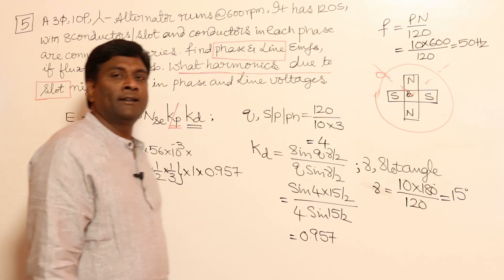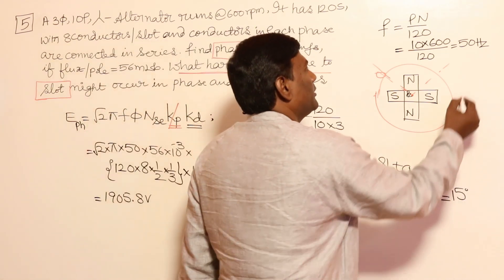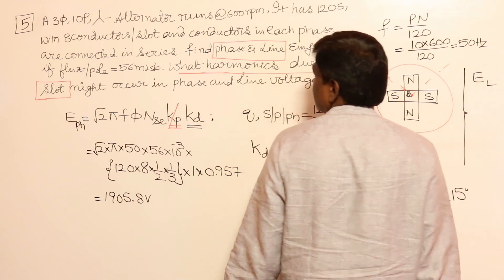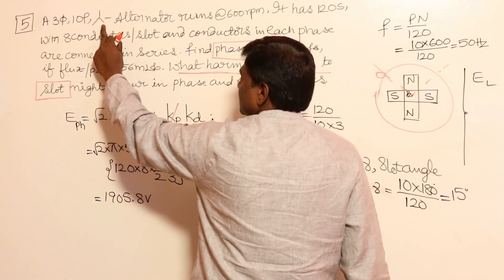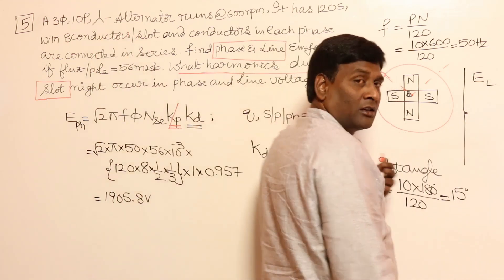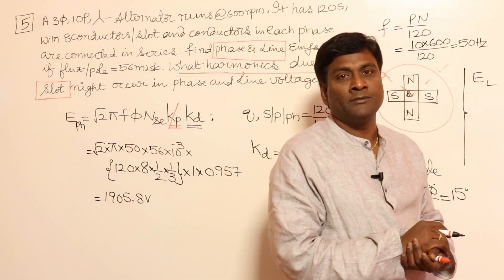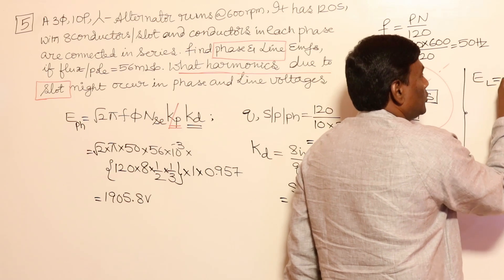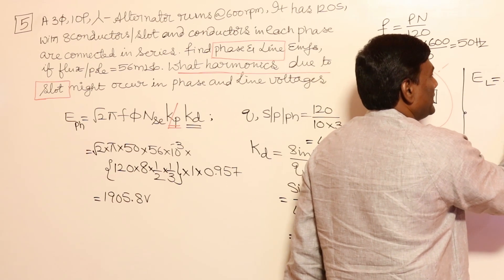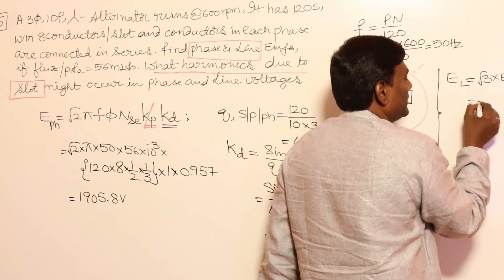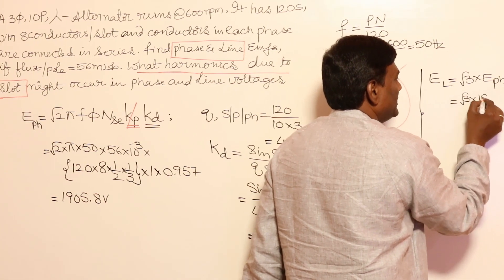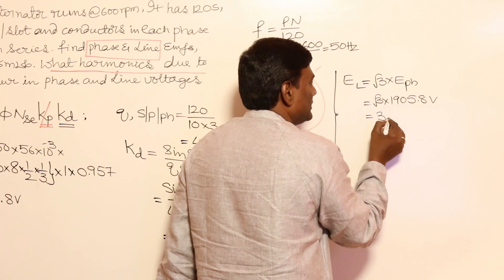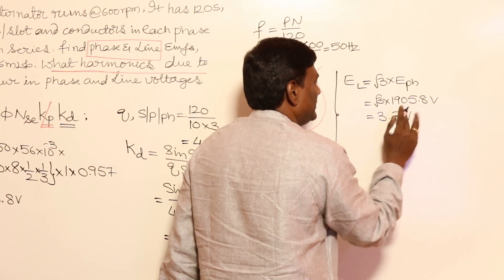Now let me calculate line voltage. The machine is connected in star, so line voltage = √3 × phase voltage = √3 × 1905.8 volts, which gives approximately 3300 volts or 3.3 kV.